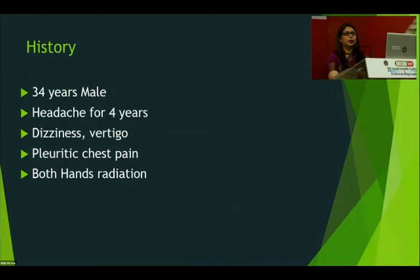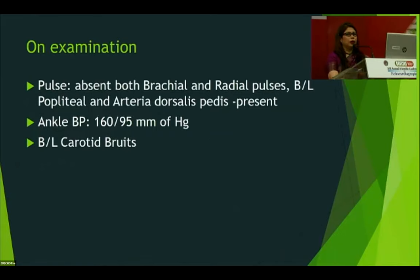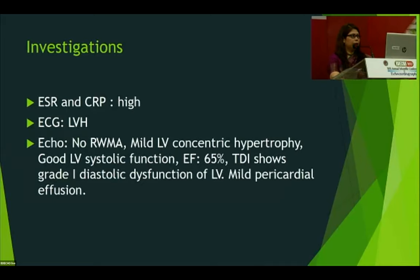On pulse examination, both brachial and radial pulses are absent; bilateral popliteal and dorsalis pedis pulses are present. Ankle blood pressure was 160/95 mmHg with bilateral carotid bruits. Investigations: ESR and CRP both raised; ECG shows LVH; echo shows no regional wall motion abnormality, mild concentric LV hypertrophy, good LV systolic function (EF 65%), Grade 1 diastolic dysfunction on TDI, and mild pericardial effusion.